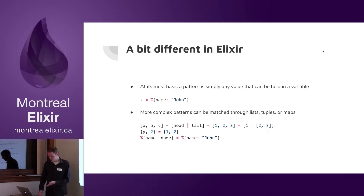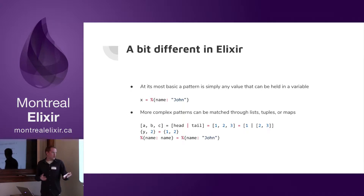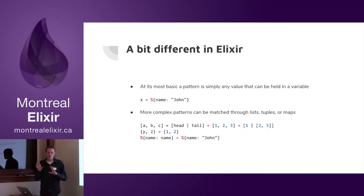We have an example where ABC is being matched against 1, 2, 3. There are multiple ways to break this down — A takes on the value 1, B takes on the value 2, and so on. In the second example, we have {Y, 2} being matched against {1, 2}. The tuple already has a fixed value of 2, which must match against the 2, and Y is free to take on the value of 1.